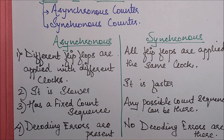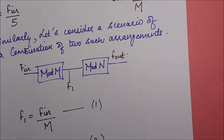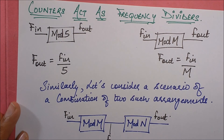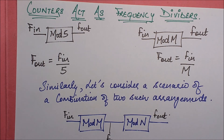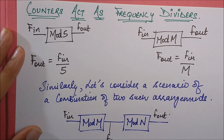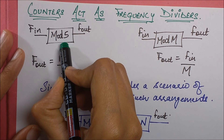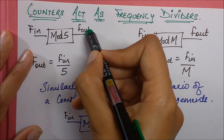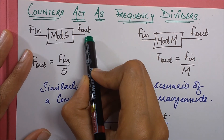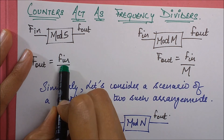In asynchronous counters, decoding errors are present, whereas in synchronous counters there are no decoding errors. Next, counters are also used as frequency dividers. For example, if I have a Mod 5 counter — meaning it has five stages — it takes a frequency input and produces a frequency output. The relation between them is: frequency output equals frequency input divided by the number of stages.